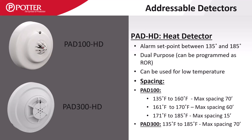The PAD HD heat detectors can be set as fixed temperature or combination rate of rise and fixed temp. They have an adjustable alarm set point as well as the ability to be used as a low temperature sensor. When using the 100 series detectors, there is a reduced spacing above 160 degrees, and the PAD 300 maintains the 70 foot spacing throughout the entire temperature range.